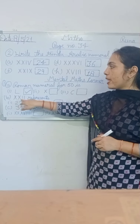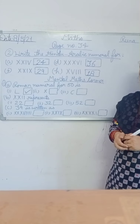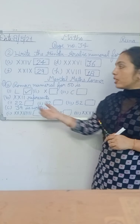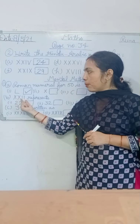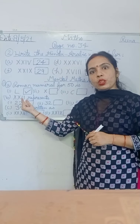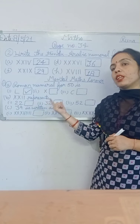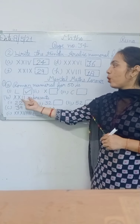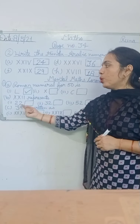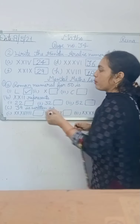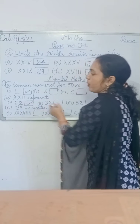Now part B is XXXII. XXXII means XX is 20 and XII means 2, so that means 20 plus 2 is 22. Now 22 is represented as 22 — that means option number 1.